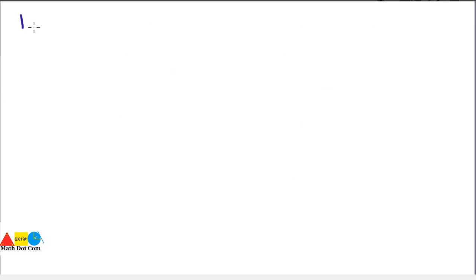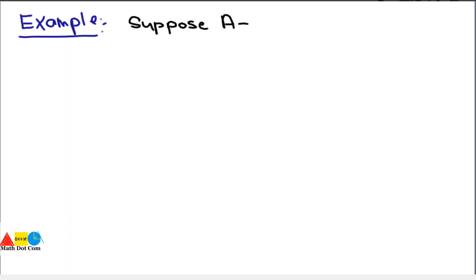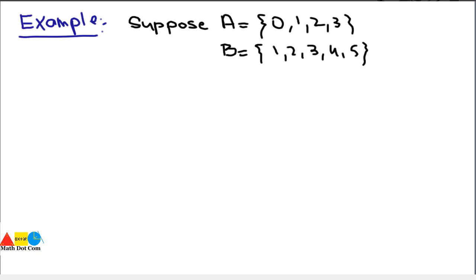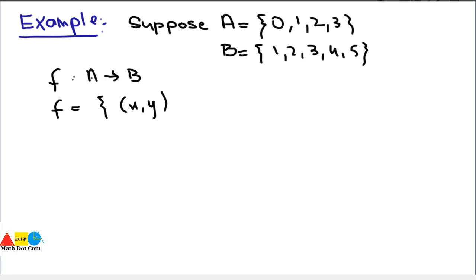We have an example: suppose A is equal to {0, 1, 2, 3} and B is equal to {1, 2, 3, 4, 5}, and the function F from A to B is defined as F = {(x, y) such that y = x + 1} for all x belonging to A and y belonging to B.